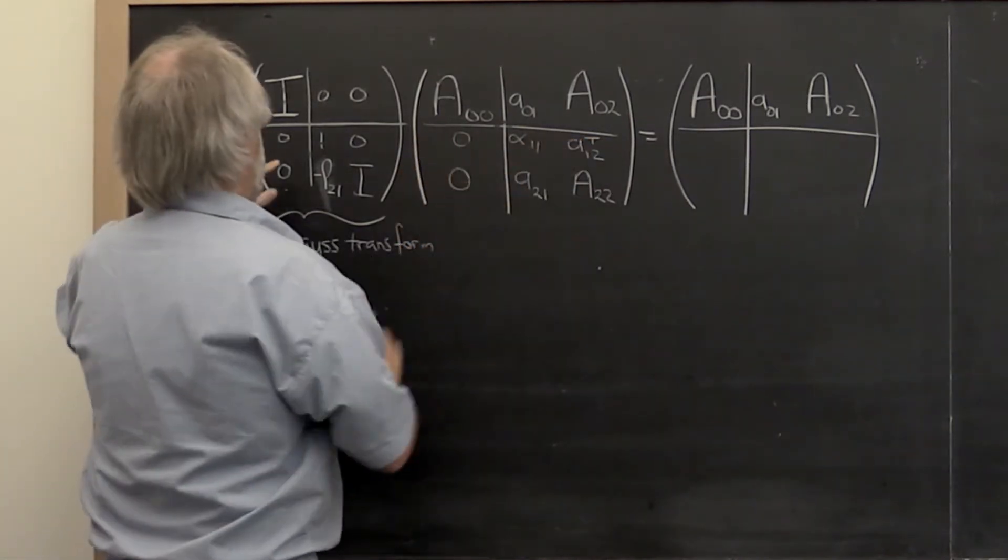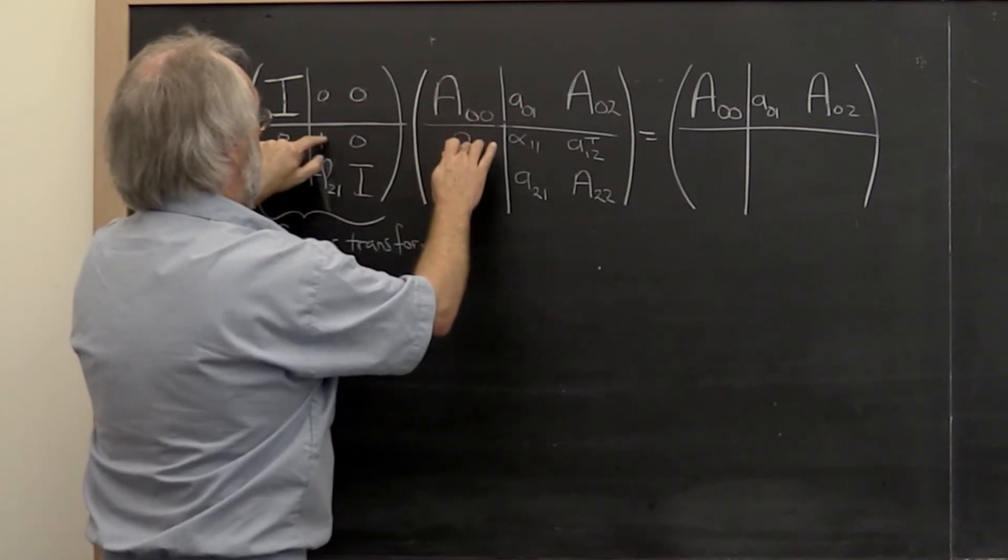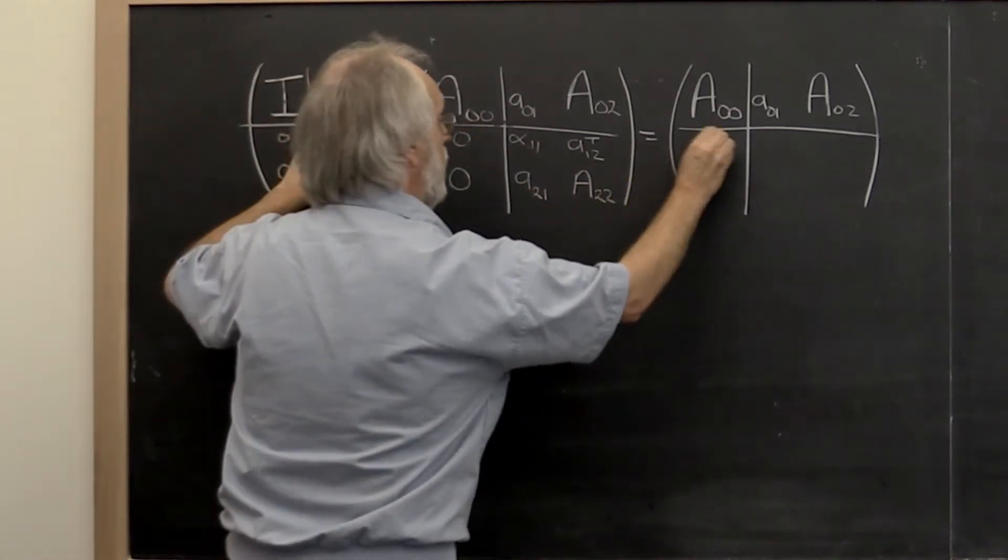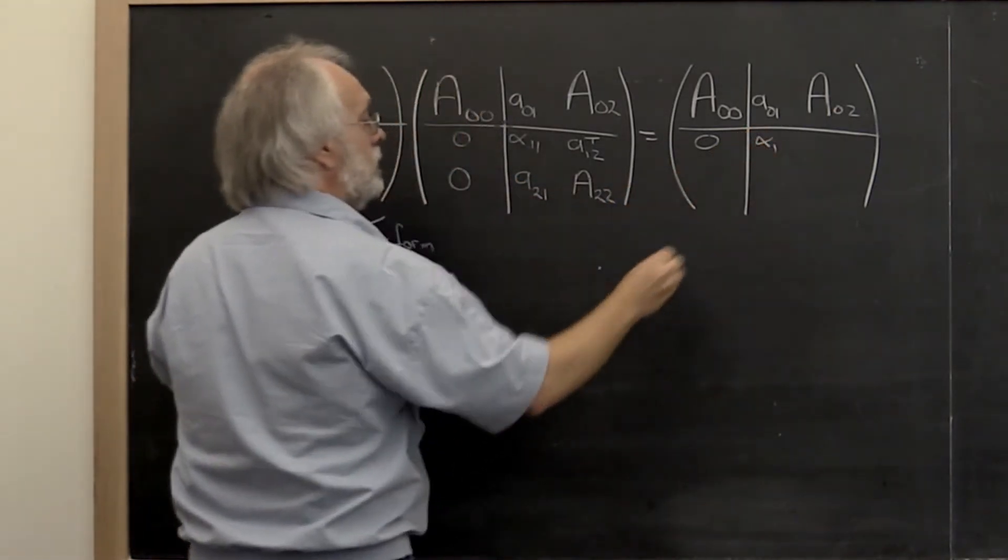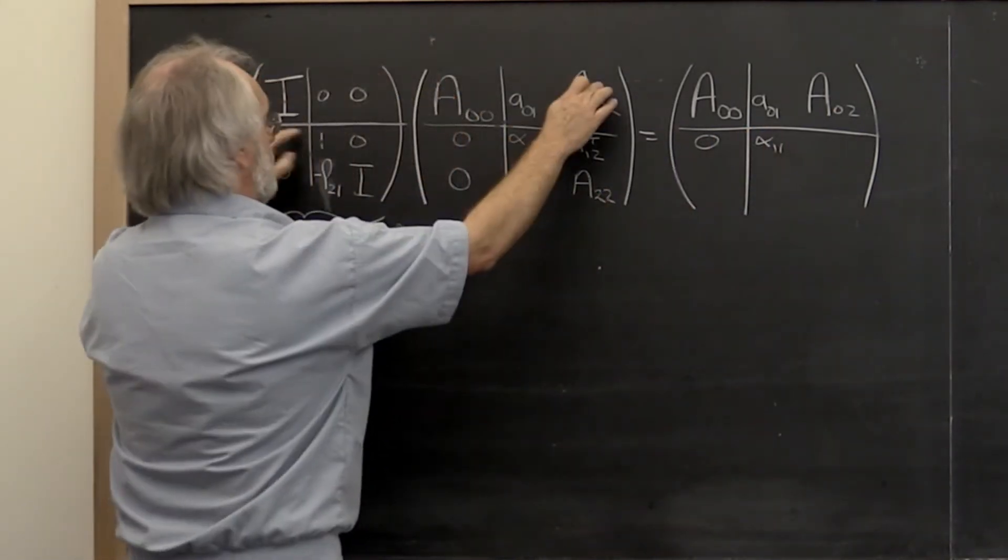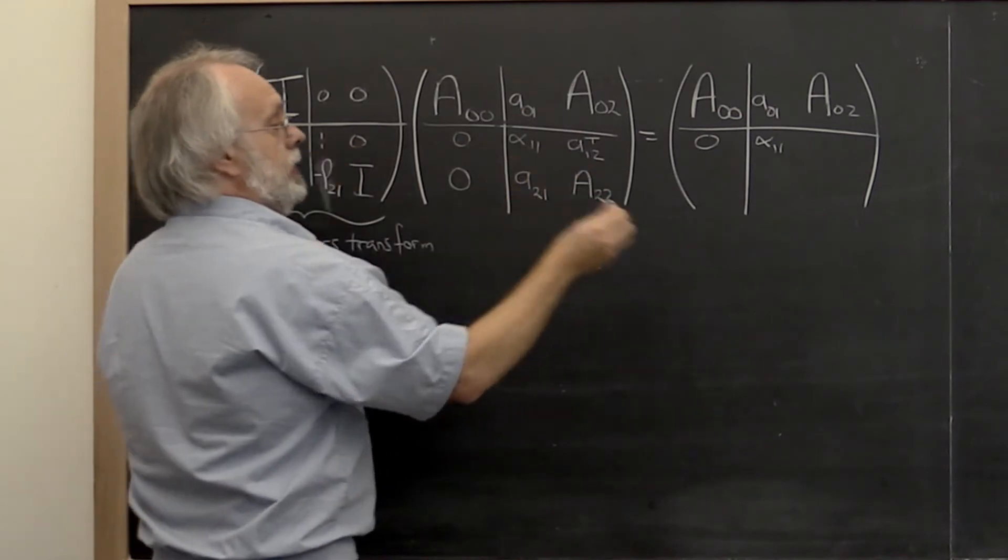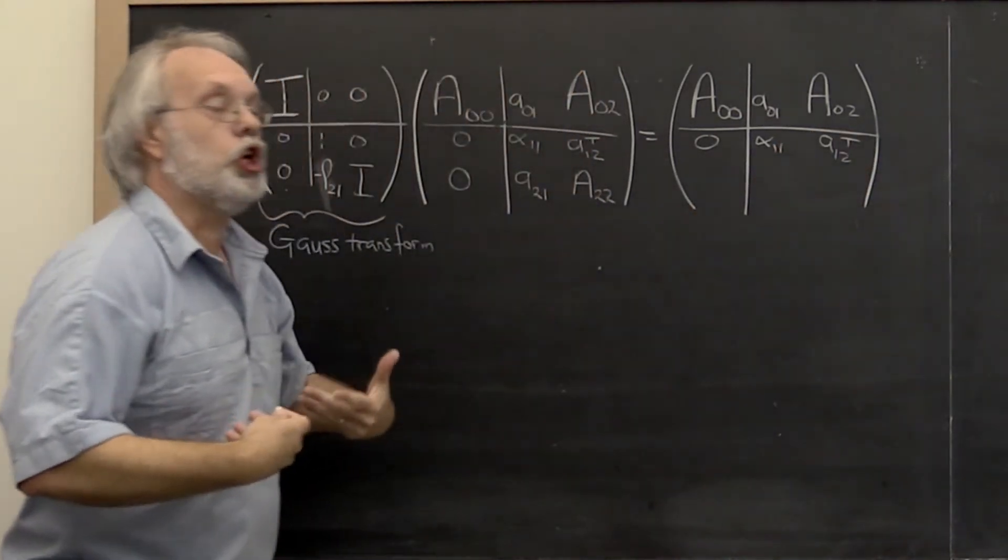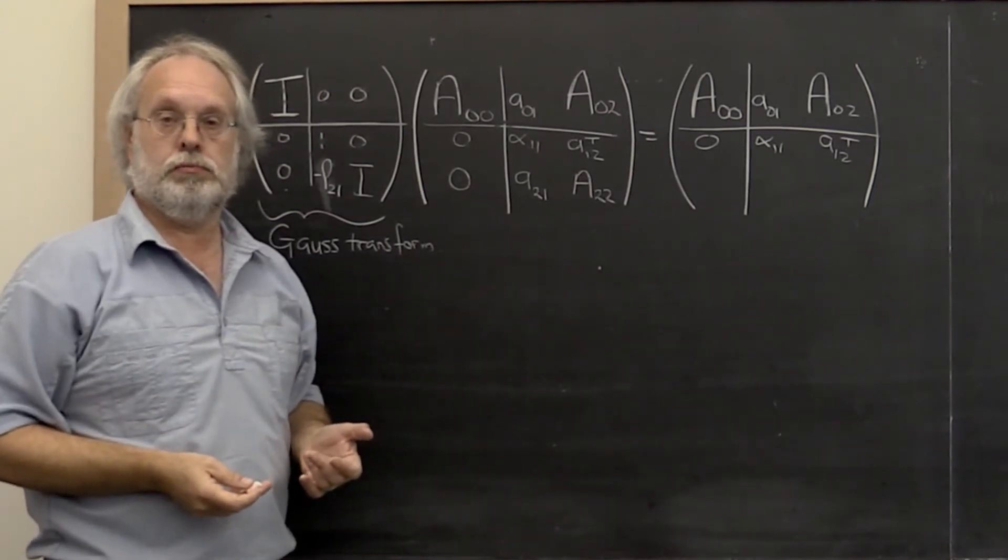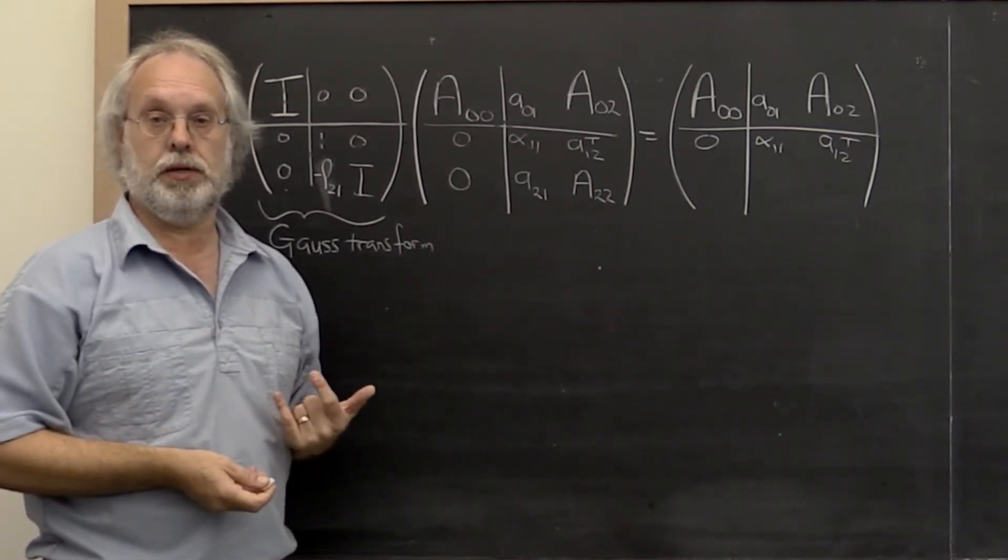This row right here becomes this times that plus this times that plus this times that. So we get a zero here. Then we get an alpha 1 1 here. And we get a A02 transpose here. The current row is left alone. Just like in LU factorization or Gaussian elimination.